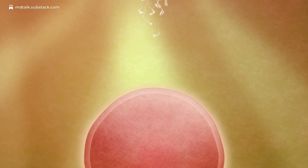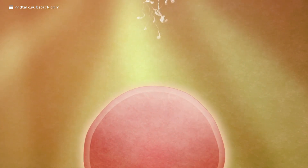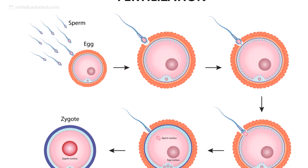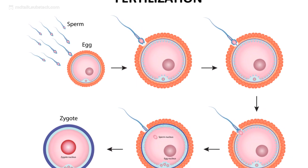At the oocyte, Izumo-1 on the sperm locks onto Juno on the egg. Fusion occurs. The sperm's contents enter, bringing half the genetic blueprint.